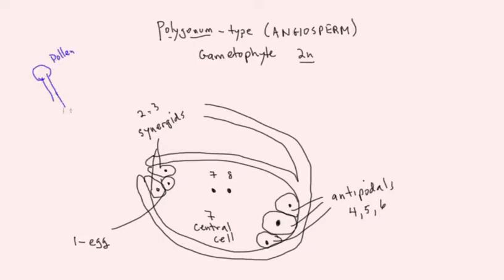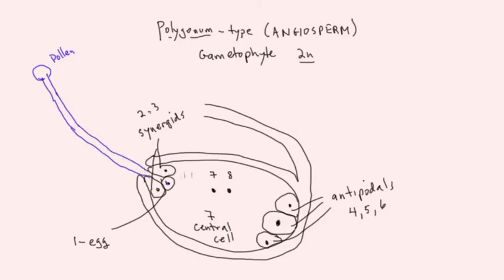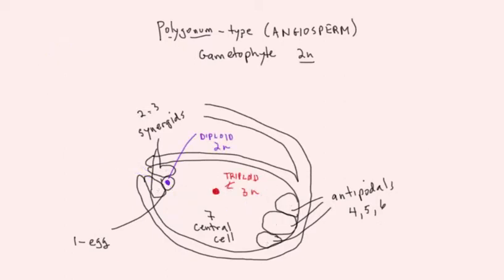When pollination takes place, two sperm nuclei are released by the pollen tube. In angiosperms, sperm number 1 fuses with the egg to form the diploid zygote. The second sperm fuses with the two nuclei of the central cell, forming a triploid nucleus. These two fertilization events — one making a diploid and one making a triploid — is the reason this is called double fertilization.